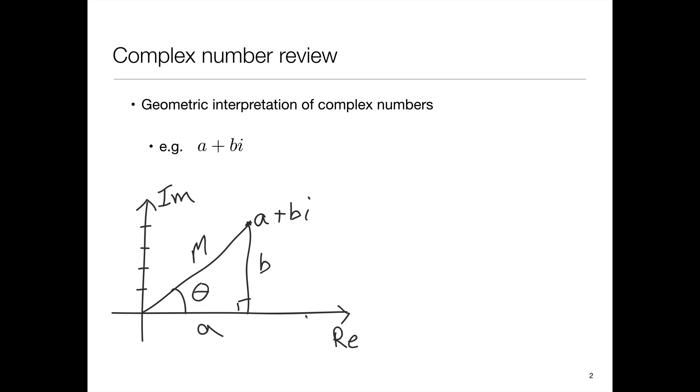the real part of a complex number as a horizontal axis and the imaginary part on the vertical axis here. And that means that a complex number like a plus bi would be represented as a point in the plane where the x-coordinate or the horizontal coordinate would be A and the vertical coordinate would be B.